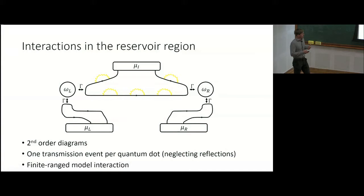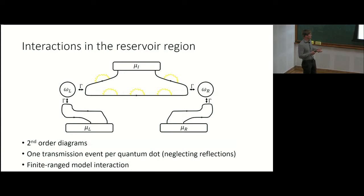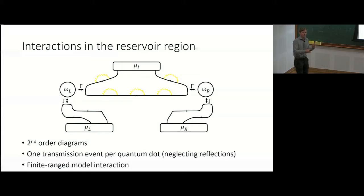To make this more interesting, I introduce interactions — first in the reservoir region. I consider second-order diagrams with only one transmission event per quantum dot, so there is also an approximation for tunneling, and I consider a finite-range model interaction. I use finite-range interactions because for a single channel with contact interactions — as is common when solving a Luttinger liquid — you do not get any relaxation, since electrons cannot be in the same place due to the Pauli principle in the same channel. By allowing for some screened interaction of finite range, it becomes possible for the electrons to release their energy.